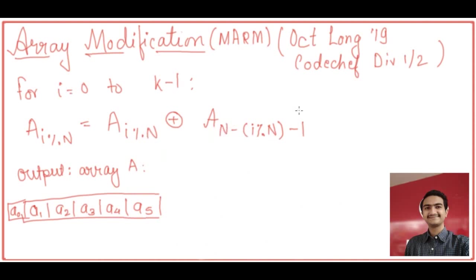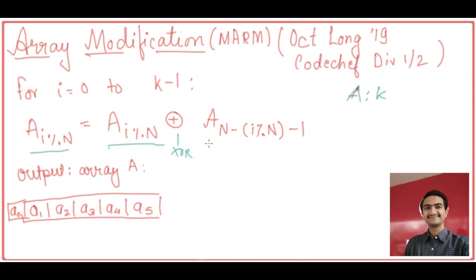We were given an array A and an integer K, and we have to perform an operation such that for i equal to 0 to K minus 1, we update A of i mod N to A of i mod N XOR A of N minus i mod N minus 1. Then we have to output the final array A.